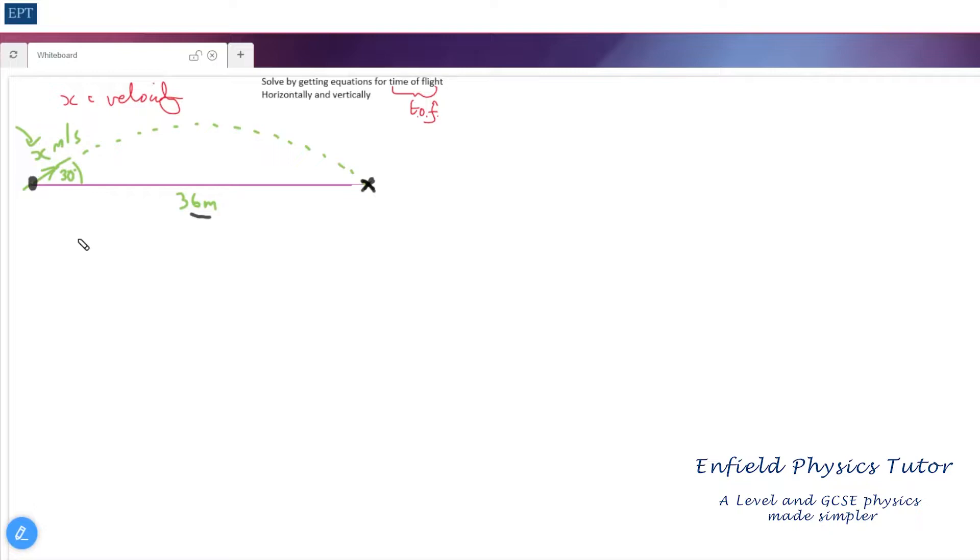But it travels 36 meters before it hits the floor somewhere over here and we've asked to find the value of x. Now the way to solve this is to consider what the horizontal and vertical motions have in common, and anything they have in common is the time of flight. So if we can get expressions for the vertical and horizontal time of flight, then that's probably going to be very useful.